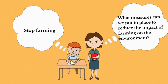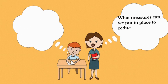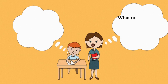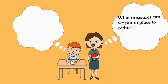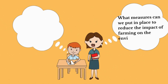This teacher is asking her student to tell her the measures that can be put in place to reduce the impact of agriculture on the environment, and his response is that we should simply stop farming. What do you think of this answer? Do you agree with him?